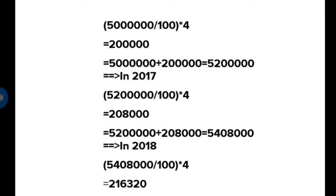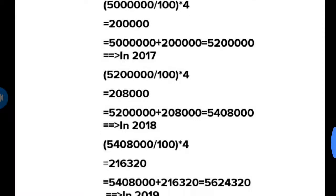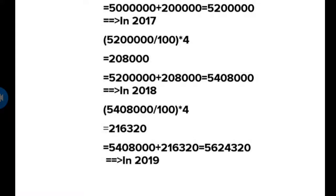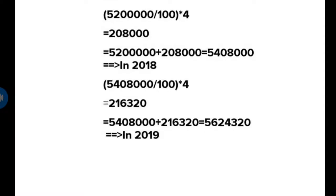In 2017, we solve the same way: 52 lakhs multiplied by 4 upon 100. This time we will get 2 lakhs 8000. Now we add it again, so it becomes 54 lakhs 8000. In 2018, we do the same: 54 lakhs 8000 multiplied by 4 upon 100, this time we will get 2 lakhs 16,320. Now we add it, so it becomes 56 lakhs 24,320. This will be our right answer.